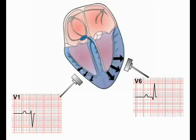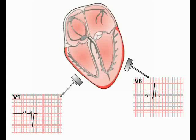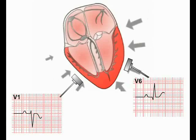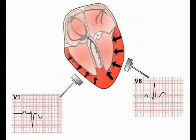When ventricular depolarization is complete, there is a brief period when no current is flowing and the recording returns to the isoelectric line. This period ends with the onset of ventricular repolarization. Remember, repolarizing current has the opposite polarity to the depolarization wave, and therefore when it is moving towards a lead it produces a negative deflection, and a positive deflection when moving away from a lead. We've already seen that repolarization spreads through the ventricles in the opposite direction to the depolarization wave, beginning in the epicardium and spreading from the epicardial to the endocardial surface of the ventricles.